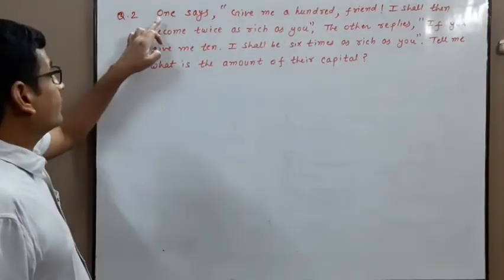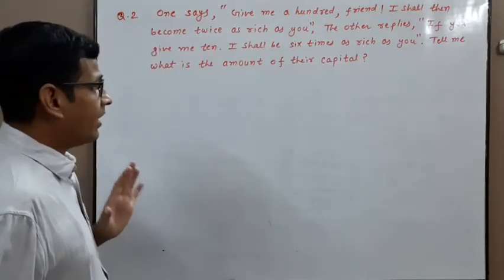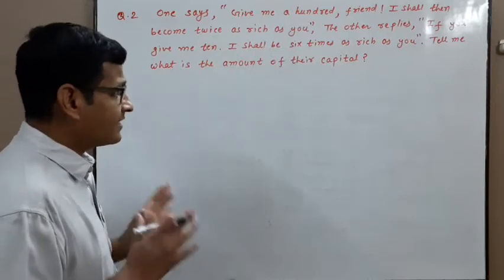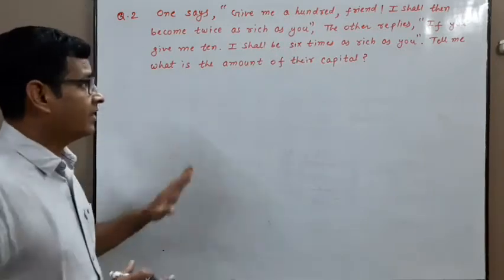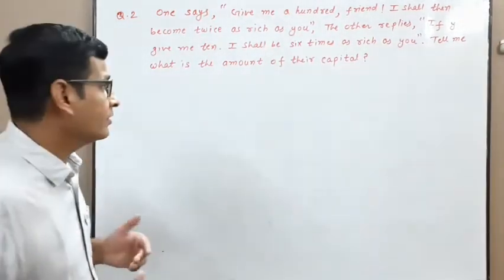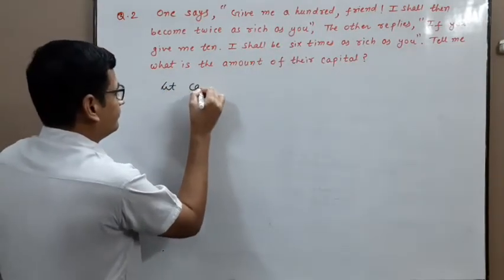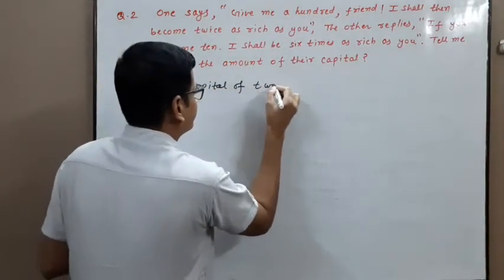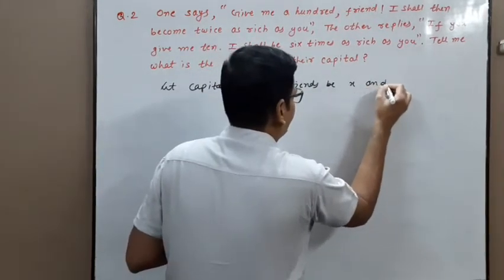Next problem. One friend says: 'Give me 100, I shall then become twice as rich as you.' The other replies: 'If you give me 10, I shall be 6 times as rich as you.' Find the amount of their capitals. Let the capital of friend A equal X rupees and capital of friend B equal Y rupees.